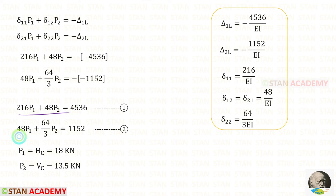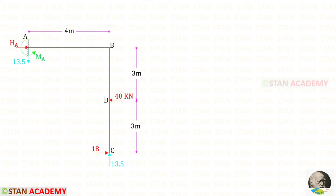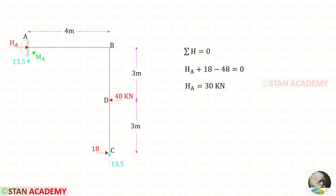We now have two equations. Using a calculator we can solve them to get HC and VC. For both, we obtain positive values, which means our assumed directions are correct. We know that in this frame there is no vertical load, so the values of VC and VA will be equal in magnitude but acting in opposite directions. We can then use equilibrium to find HA.